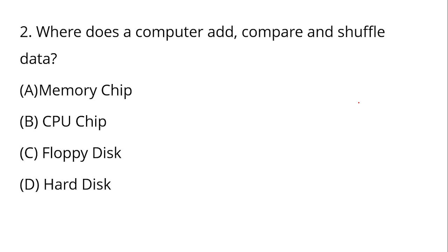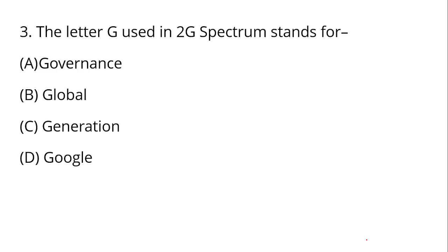Next question: Where does a computer add, compare, and shuffle data? A computer can add data, compare data, and shuffle data — that is the CPU chip. The CPU chip is the processor. So the answer is CPU — the processor.